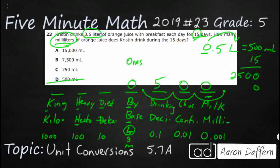So we do 500 times 15, which gives us 7,500. That's going to be our answer. That's how we use 'King Henry Died By Drinking Chocolate Milk' to get our prefixes for the metric system. Our answer here is B: 7,500 milliliters.